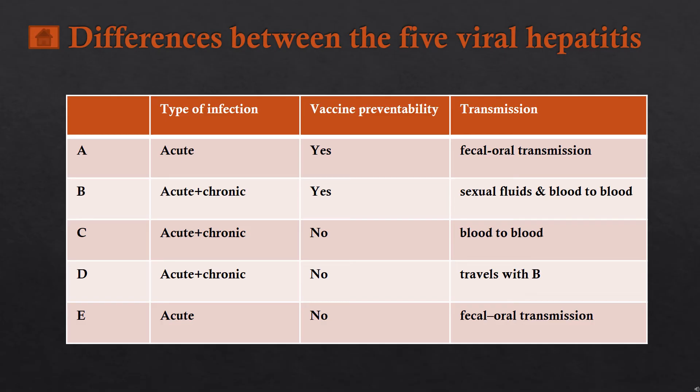Hepatitis D has both acute and chronic phases, with no vaccine. Its mode of transmission is shared with hepatitis B, and in most cases a person diagnosed with hepatitis B is predisposed to hepatitis D.